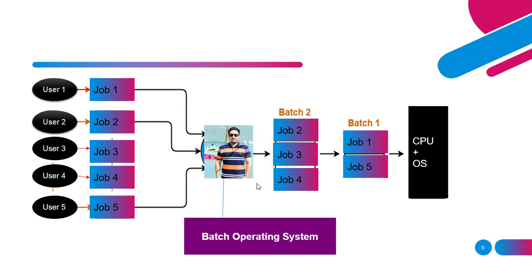The operator analyzes all the jobs and, based on their similarities, makes different batches. You can see on your screen that Job2, Job3, and Job4 are similar in nature, so he made a separate batch. Job1 and Job5 are similar, so he made another batch. Batch1 and Batch2 will be processed separately — Batch1 will be processed at once and then Batch2 will be processed at once.